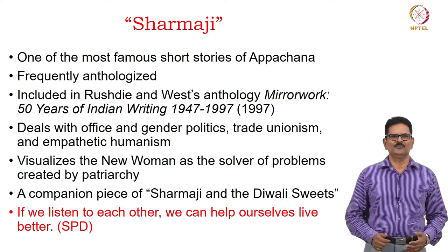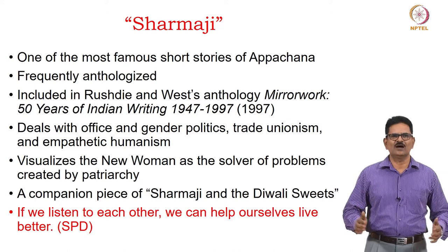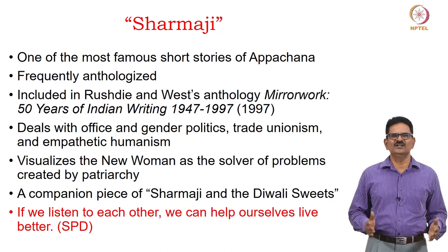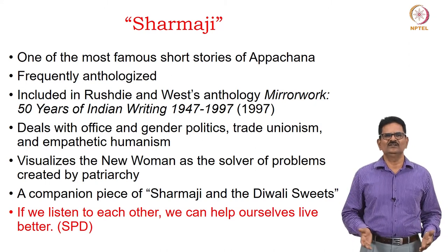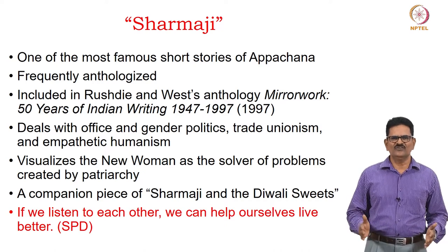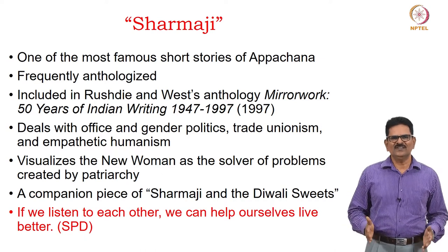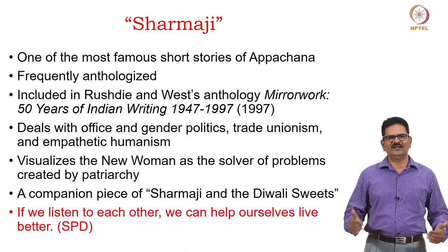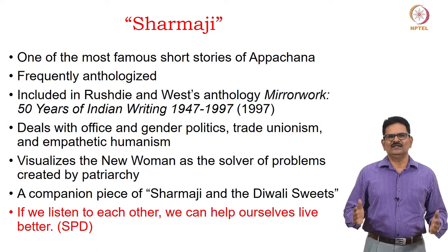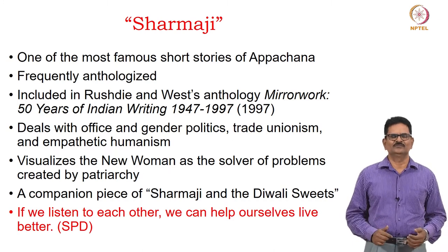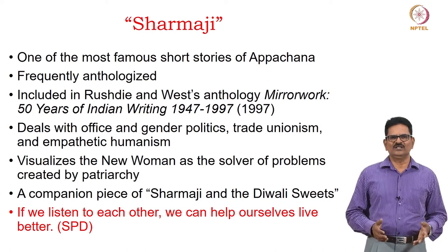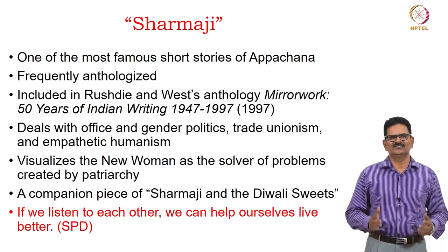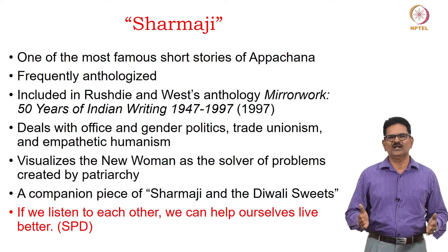Sharmaji is one of the most famous short stories of Anjana Apachana. It is frequently anthologized, having been included in the Rushdie and West anthology Mirror Work: Fifty Years of Indian Writing, 1947 to 1997. The story deals with office and gender politics, trade unionism, and empathetic humanism. It also visualizes the new woman as a solver of problems created by patriarchy. The companion piece Sharmaji and the Diwali Sweets is also interesting to read alongside. A key insight from the story: if we listen to each other, we can help ourselves live better. Sharmaji learns to live better after being listened to by Miss Das.